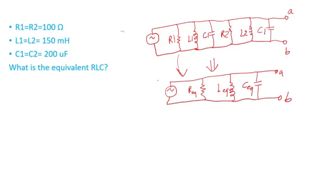Looking at the original circuit, I notice that R1 is in parallel with R2. The equivalent resistance when you have two resistances in parallel is the product of the resistances divided by their sum. So Req equals R1 times R2 divided by R1 plus R2, which equals 50 ohms.